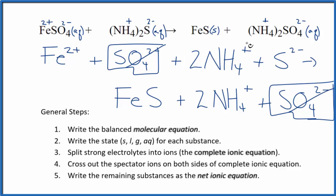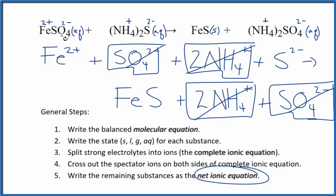And then 2 ammonium ions here in the reactants. And again, in the products. Spectator ions. We cross those out. What's left, that's the net ionic equation for FeSO4 plus (NH4)2S.